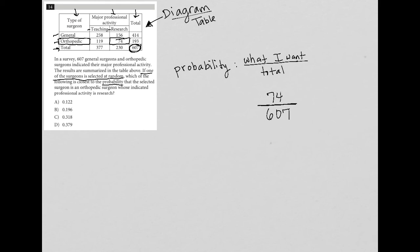So I'll just go to my calculator and type in 74 divided by 607, and what I get is that that's equal to 0.1219. Glancing over at the answer choices, I see that this can be rounded to 0.122, and therefore the correct answer here is choice A.